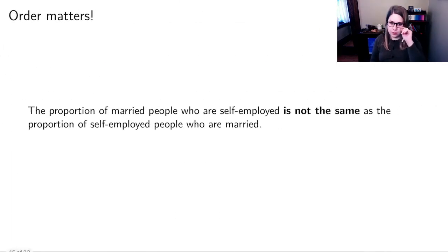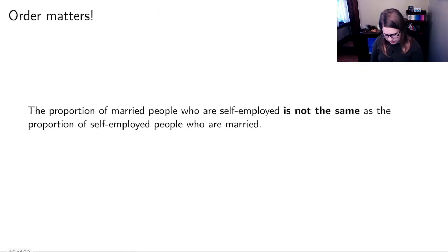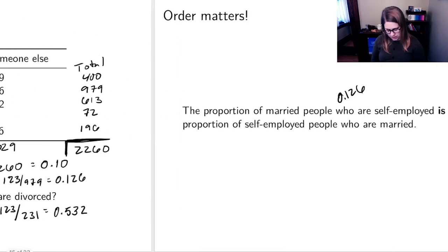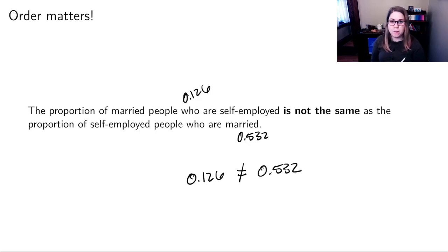This brings up a really important point: order matters. The proportion of married people who are self-employed — 0.126 — is not the same as the proportion of self-employed people who are married — 0.532. So 0.126 is not equal to 0.532. It matters what you use as the denominator of your fraction, so you have to read questions carefully.